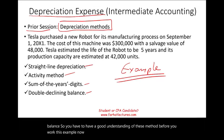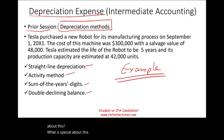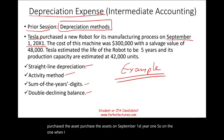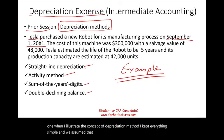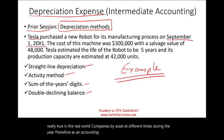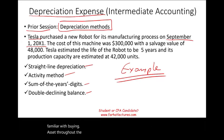What is special about this example is the fact that Tesla, the company that purchased the asset, purchased the asset on September 1st, year one. When I illustrated the concept of depreciation methods, I kept everything simple and assumed we purchased the asset January 1st. That's not really true in the real world. Companies buy assets at different times during the year. Therefore, as an accounting student or a CPA candidate, you need to be familiar with buying assets throughout the year and how much depreciation to book.